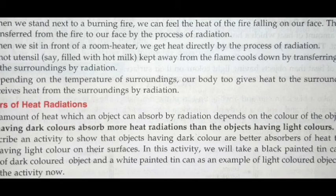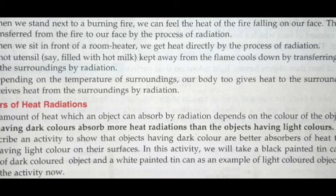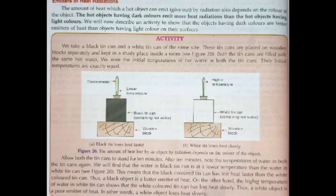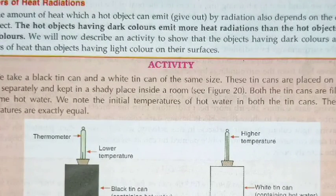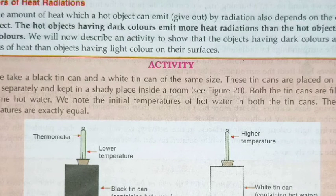The amount of heat an object can absorb by radiation depends on the color of the object. Objects having dark colors absorb more heat radiation than objects having light colors. Similarly, dark-colored hot objects emit more heat radiation than light-colored hot objects.